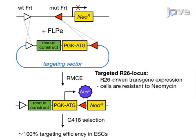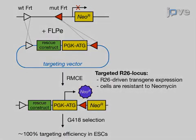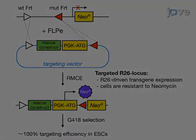Only upon correct recombination, the trapped promoterless neomycin resistance gene in the ROSA26 docking site will be restored via a PGK promoter.